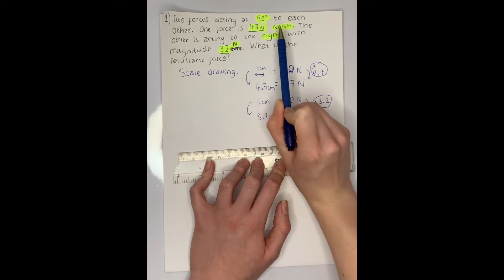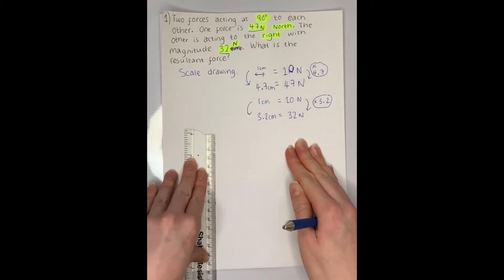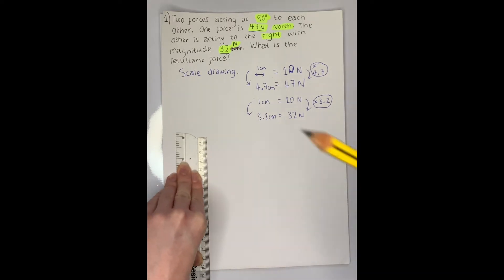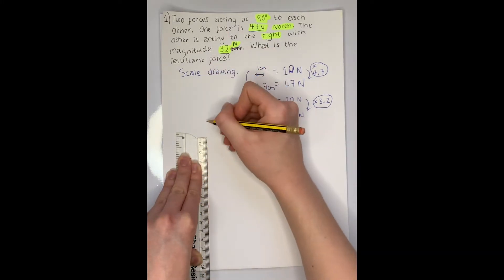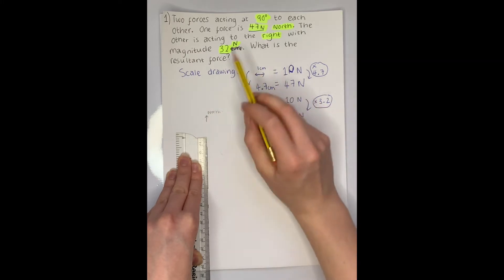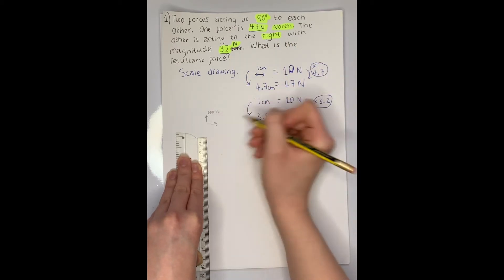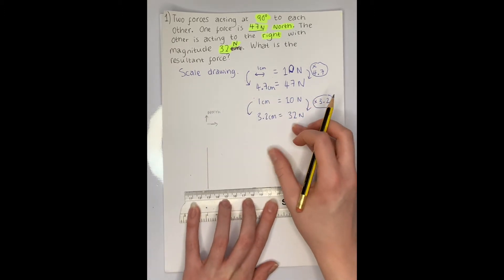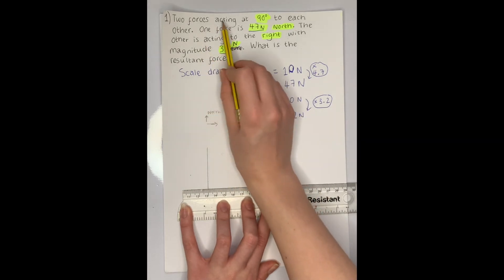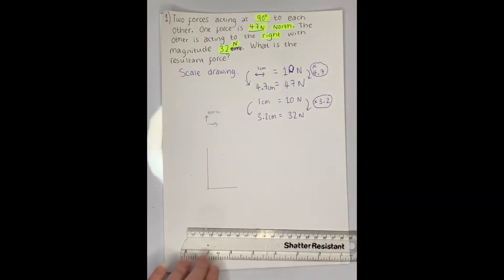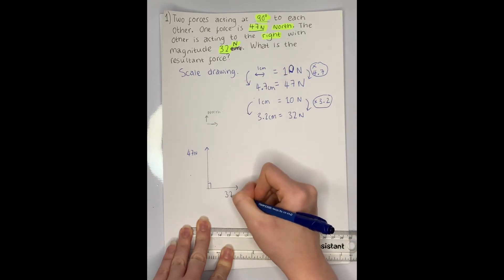The first force is 47 newtons to the north, and my arrow needs to be 4.7 centimetres long. Let's draw a line 4.7 centimetres long to the north — make sure you've got a sharp pencil. I've drawn it to the north, so that is my north direction. My second force is 32 newtons going to the right, so I'm going to draw my 3.2 centimetres to the right, making sure this is a right angle because it says acting at 90 degrees. I'll label these: 47 newtons to the north, and 32 newtons to the right.